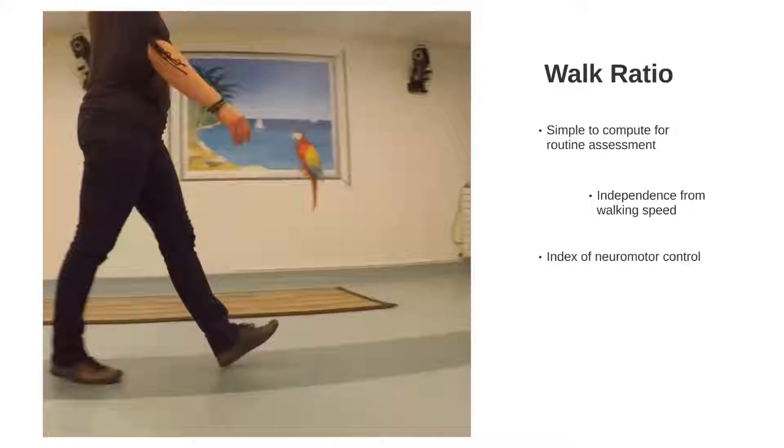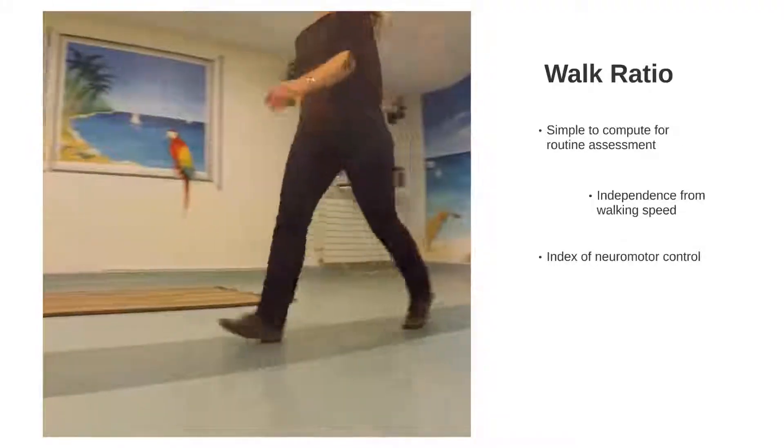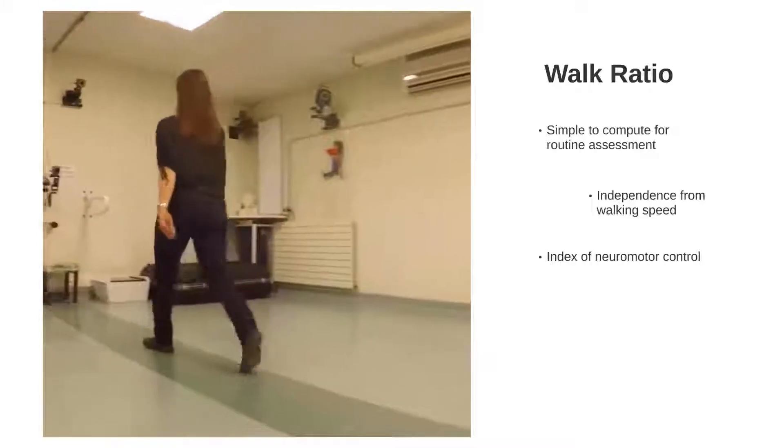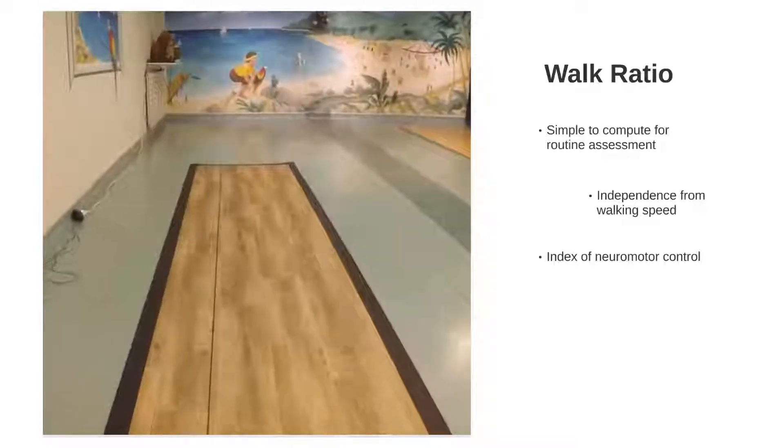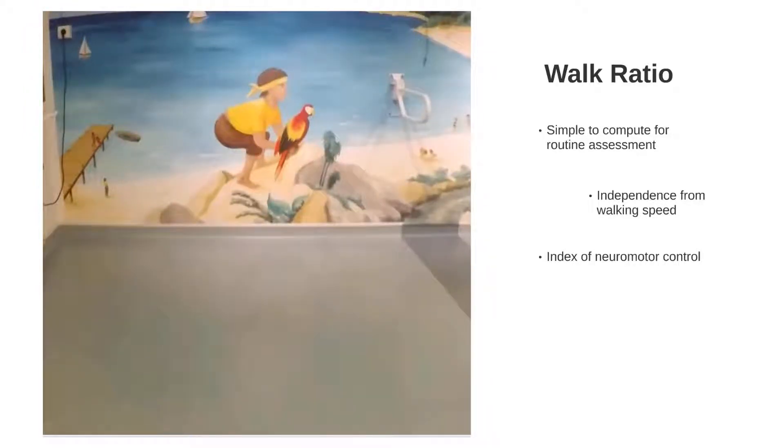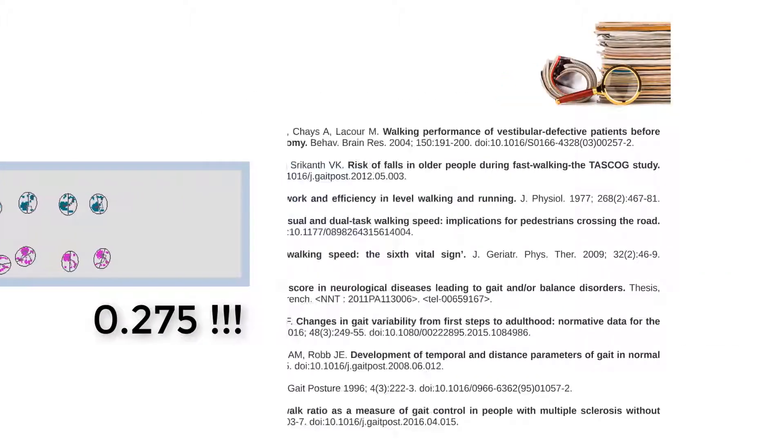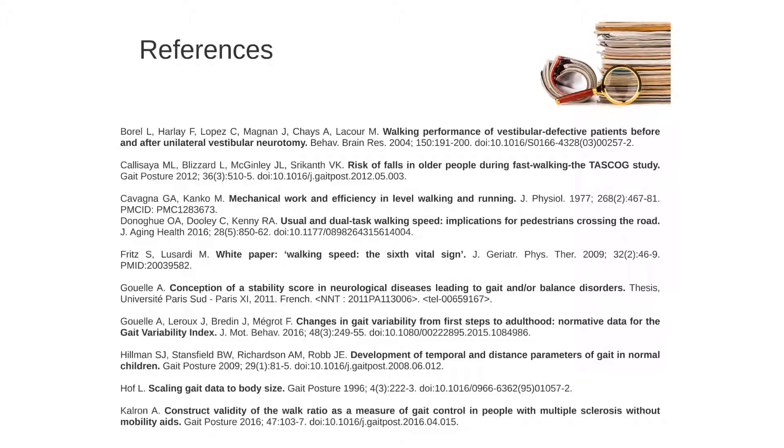In conclusion, despite its simplicity, the walk ratio can be proposed as a routine complement to the functional assessment of gait in patients. While other gait parameters, kinematic or kinetic, change with walking speeds, the walk ratio is independent of speed. Therefore, for follow-up, it provides an appropriate summary index of neuromotor control regardless of baseline speed or speed increments associated with treatments.